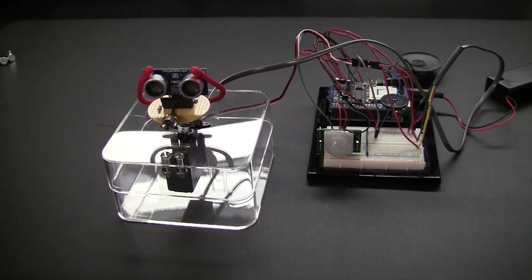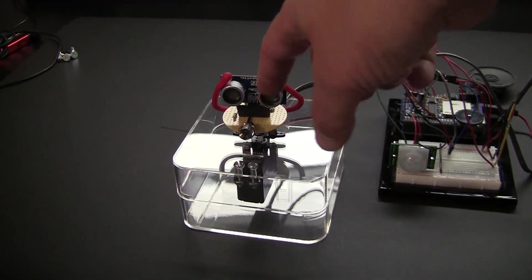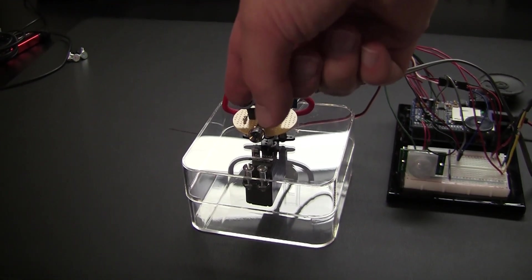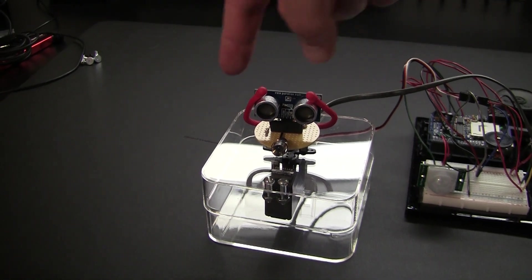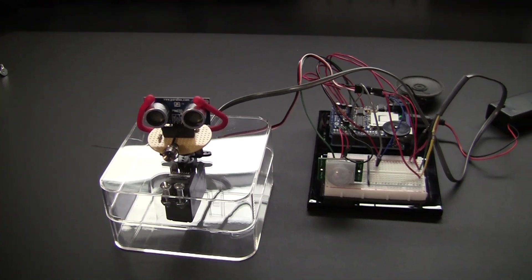But it will look for a target within two feet of it, and if it doesn't find anything the servo is going to start turning. It's going to turn and check for an object, turn and check for an object, and it will do that for a whole 180 degrees. It will keep sweeping and searching for a target.